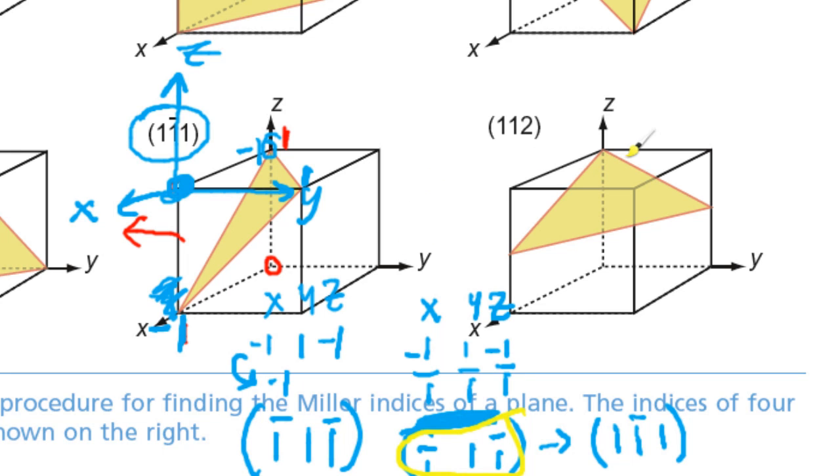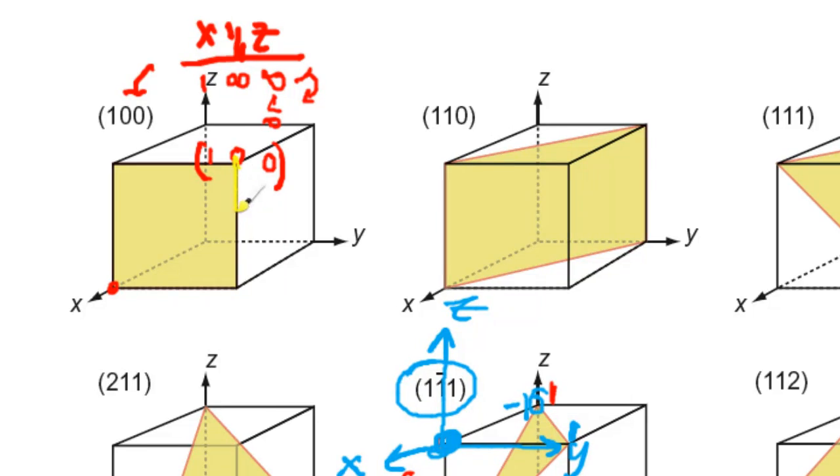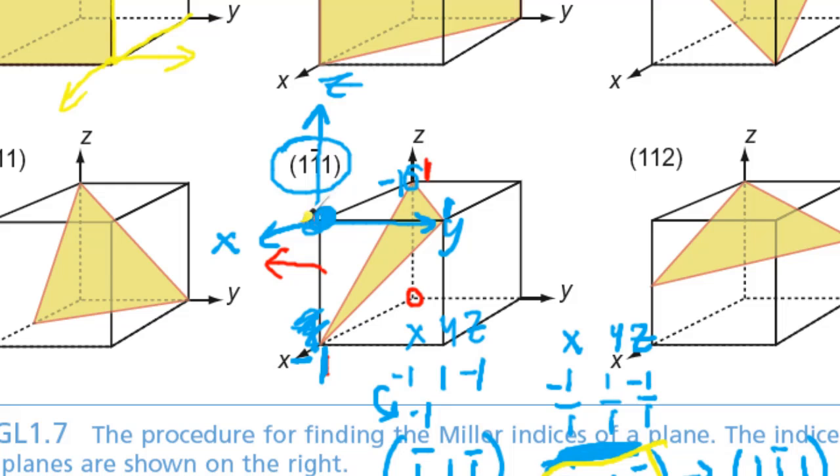Whenever you have a situation where the plane either runs through what you think the origin, if you thought that the axis, the set of axes were like this, for example, you actually have to move the origin until before you can figure out the interception point. Or, if you see it runs into the axis outside of the cube, you have to move the set of axes, or the origin, so that the plane can hit the x, y, z axes inside the cube.